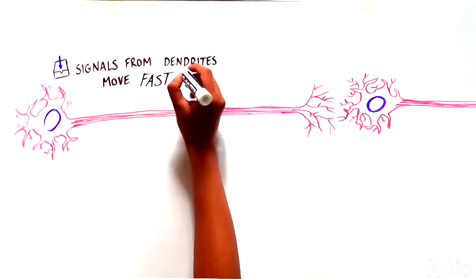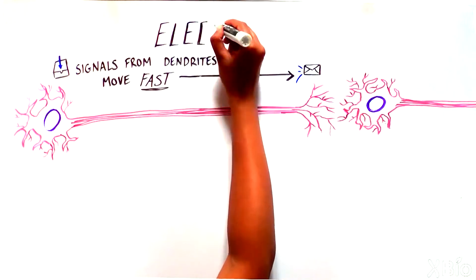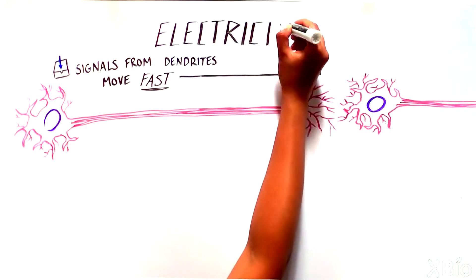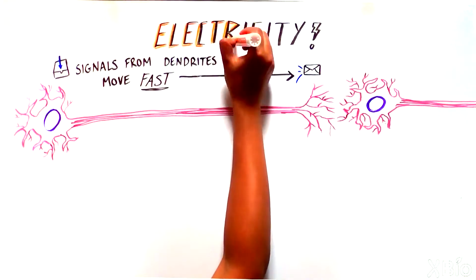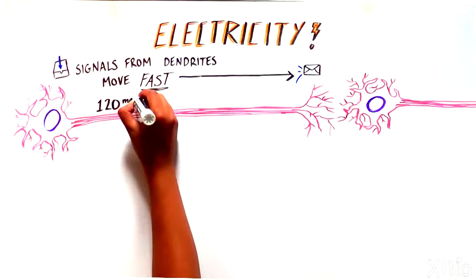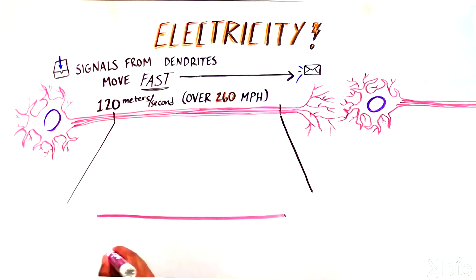But how exactly does a signal received by dendrites travel all the way down a long axon so fast? The answer is electricity. Neurons are able to generate electrical signals that can rapidly travel through the cell, sometimes up to 120 meters per second, which is over 260 miles per hour.